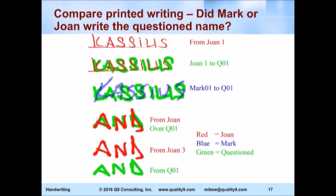This was a situation where there was a question: did one of three people write a name? What I did here is I had the writing we know the person wrote — the word Cassius. We also wanted to find out, did Joan or Mark write it? By overlaying them, changing the colors, overlaying them on top of each other — who wrote it? The green is the one in question. Joan. See how well that comports? We look at the spacing — it's almost identical. The sizing — it's almost identical.